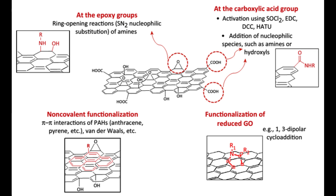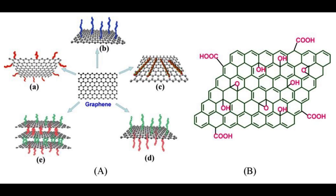Functionalized graphene refers to graphene sheets that have been chemically modified by attaching various functional groups or molecules to their surface. Graphene is a single layer of carbon atoms arranged in a two-dimensional honeycomb lattice. When functional groups or molecules are added to the graphene structure, it imparts specific properties and characteristics to the material, making it suitable for a wide range of applications.